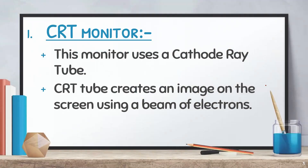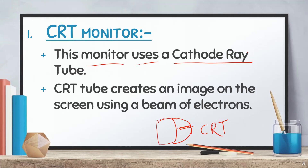First, we have the CRT monitor. You can see the TV on the left side of the screen — this type of monitor is made using a CRT, which stands for cathode ray tube. It creates images on the screen by using a beam of electrons.